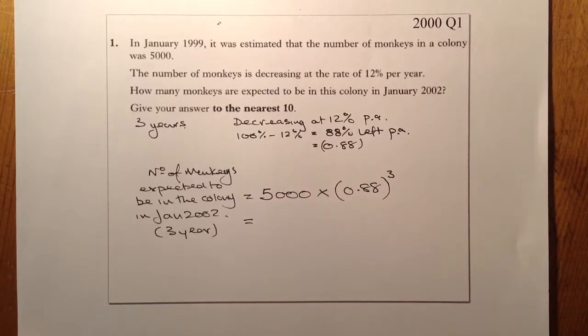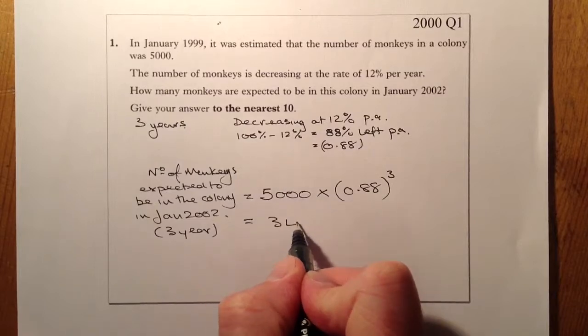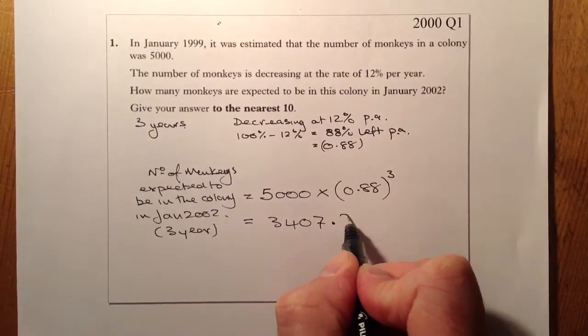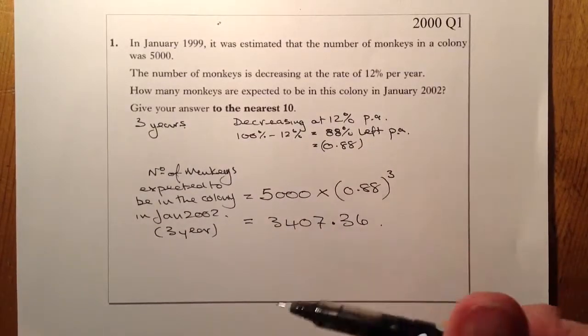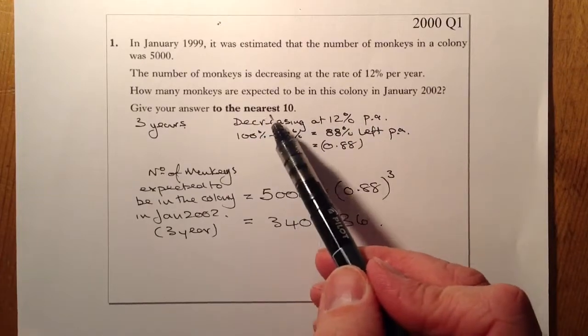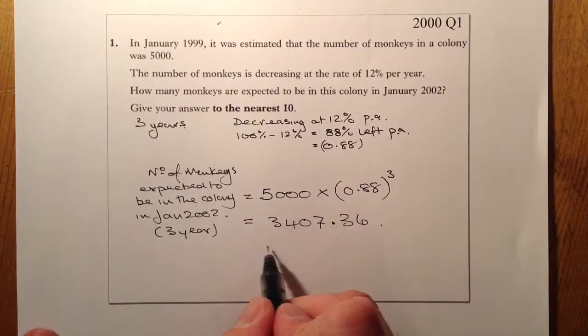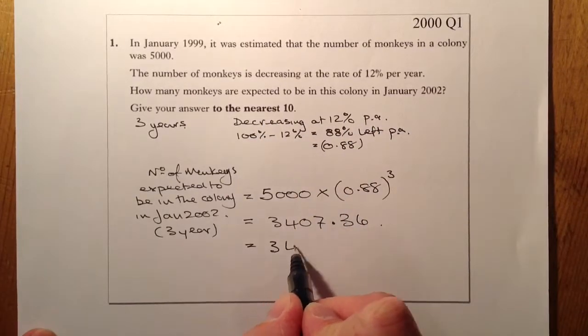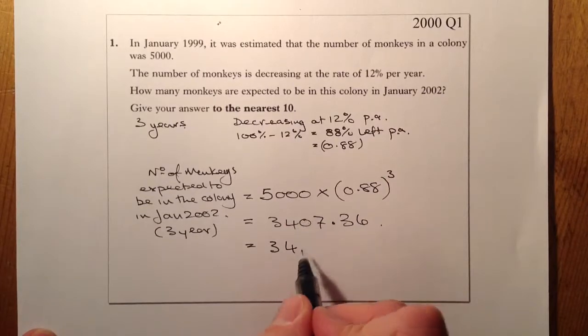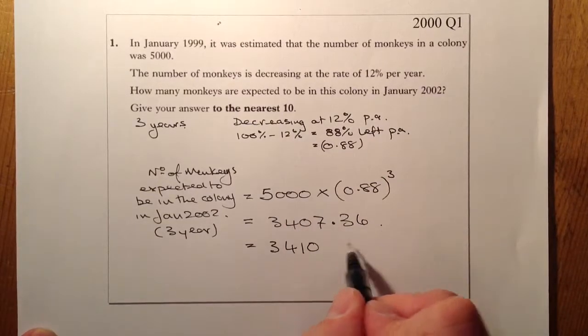So put that just straight into the calculator and cube this number here. And that should give me 3407.36. I have to give my answer to the nearest 10. So what I'll do is I'll be giving it to 3,410. And I'm just going to round that to there. That's going to go up to 10. And that's going to be monkeys.